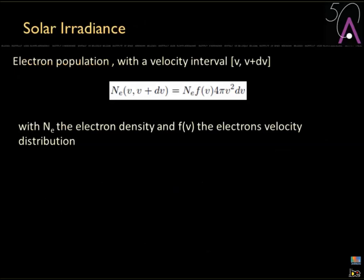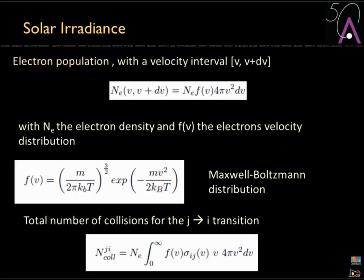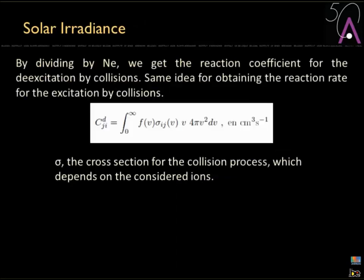To estimate the rate coefficient we take into account the electron population in the velocity interval between v and v+dv, the electron density, and the electron velocity distribution — for which we use the Maxwell-Boltzmann distribution. This gives us an estimate of the total number of collisions for a transition between levels g and e. A key parameter here is the cross section.